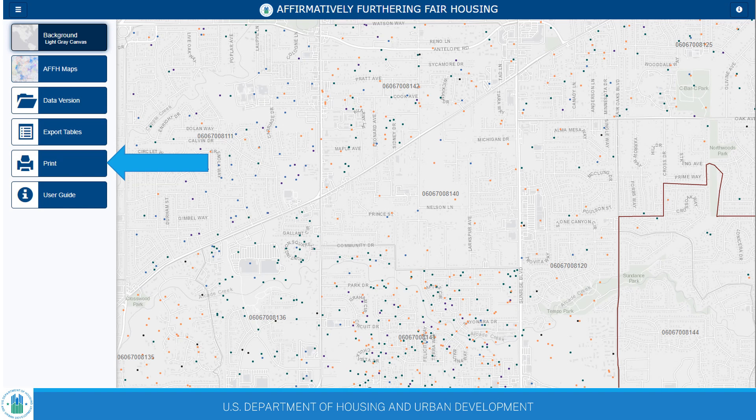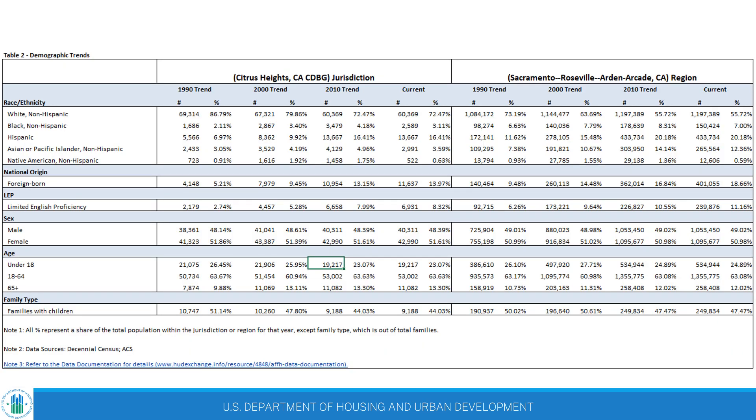Users can print the resulting maps, including their customizations, to an image file or physical copy so that their map can be shared with others or inserted into planning documents. The AFFH-T interface also allows users to generate summary tables using the Export Table button on the left side of the screen. These tables can be downloaded to analyze the jurisdiction and region level trends associated with the map selected.